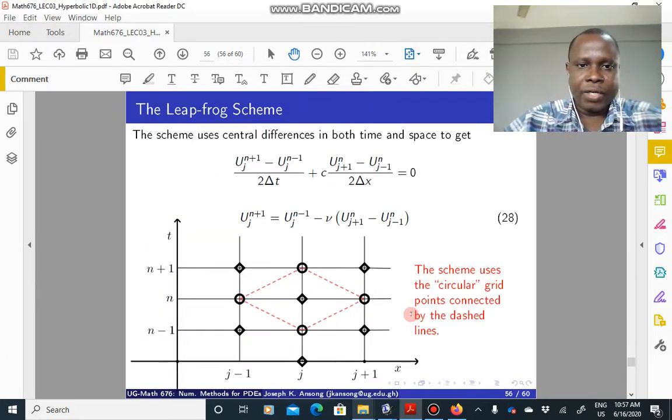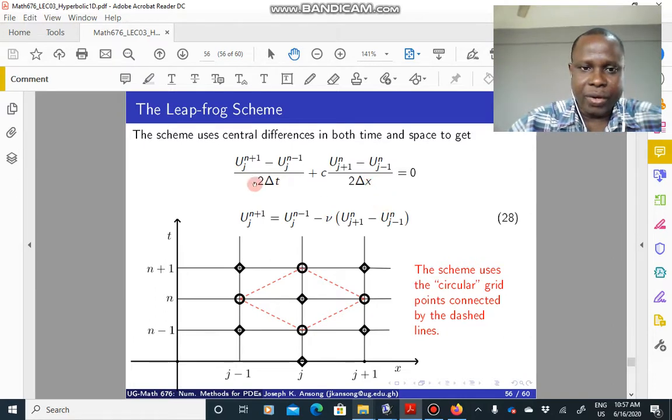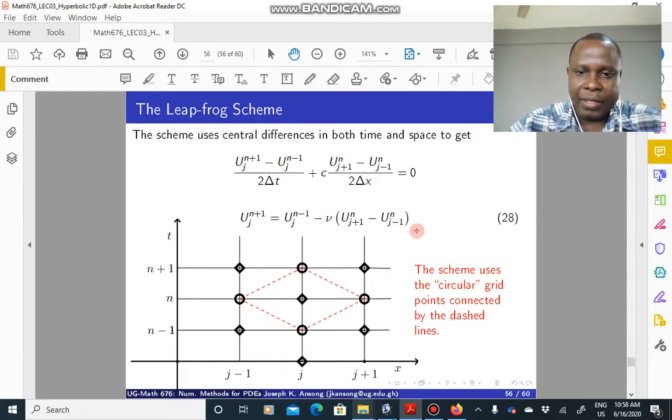The scheme is given by this. It uses central differences in both time and space, so that's why you have this and you have that. If you rearrange this, you have this equation here, equation 28, which is the Leapfrog scheme.